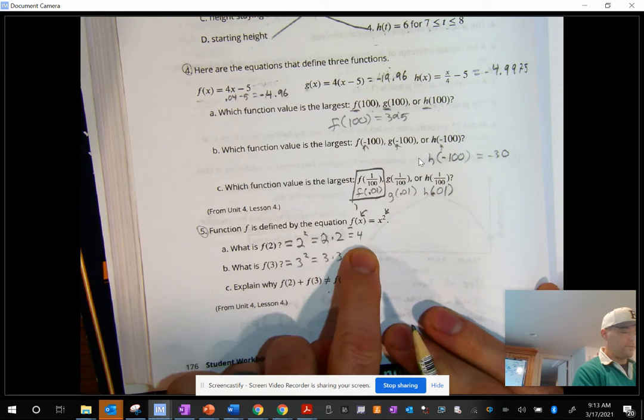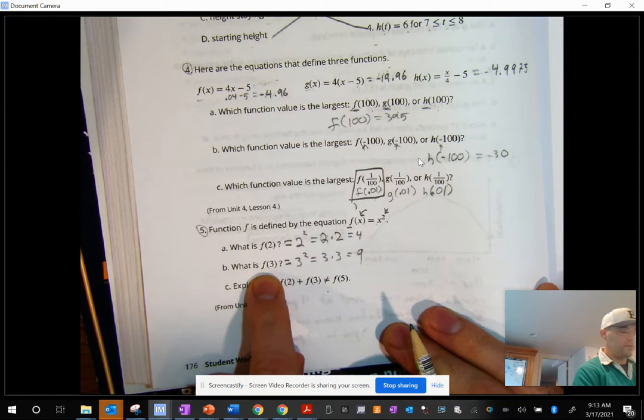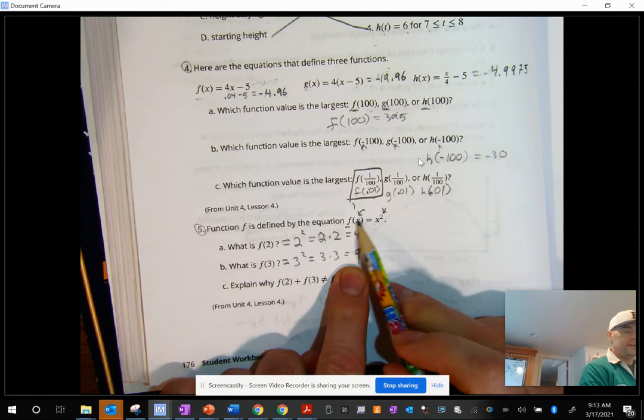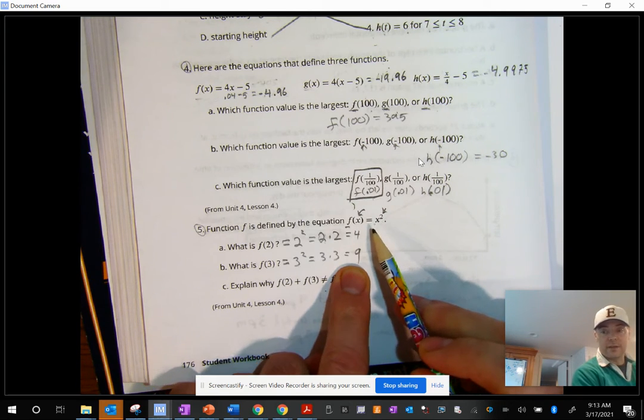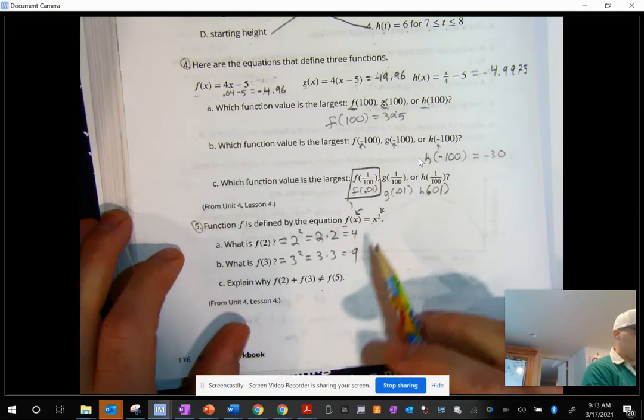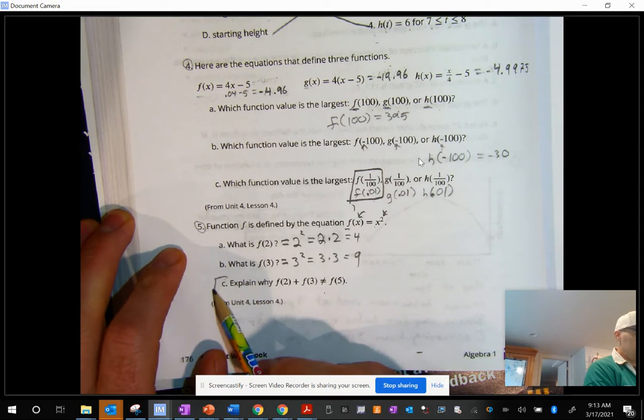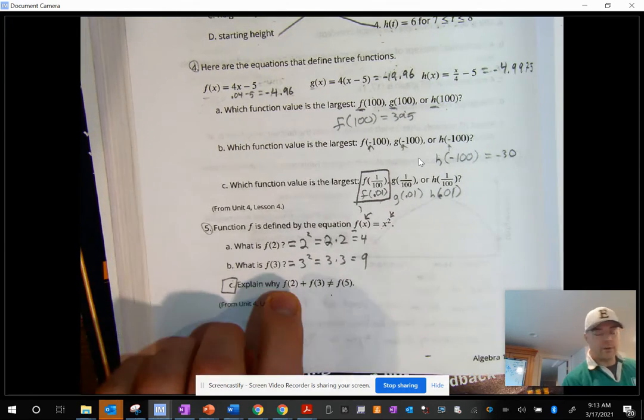F of 2 was 4. F of 3 was 9. That's because the function is taking whatever input is and squaring it, right? So it's like making it times itself. So the C down here, that's the most important question.